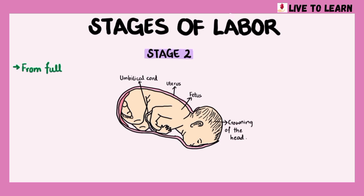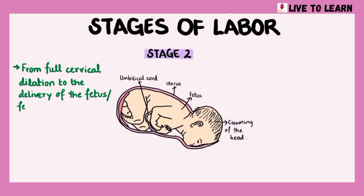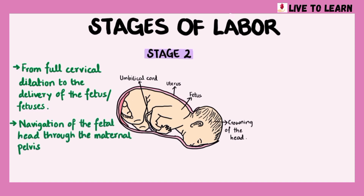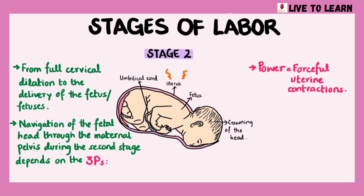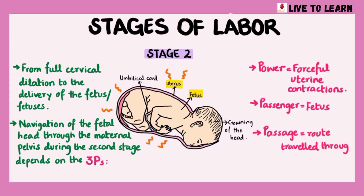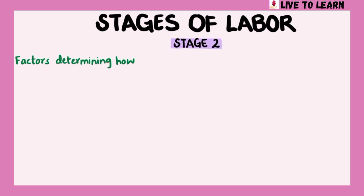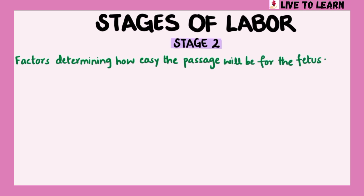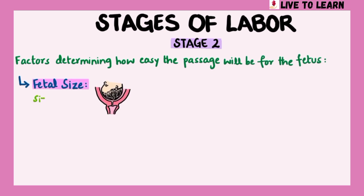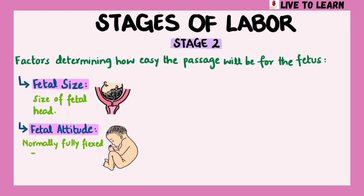The second stage of labor lasts from full cervical dilation to the delivery of the fetus or fetuses. Navigation of the fetal head through the maternal pelvis during the second stage depends on the three Ps. The first P is power, which refers to the forceful uterine contractions. The second P is passenger, which refers to the fetus. And the third P is passage, which refers to the route traveled through the bony pelvis. The factors determining how easy the passage will be for the fetus include fetal size, which refers to the size of the fetal head.